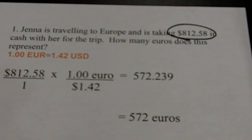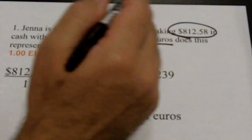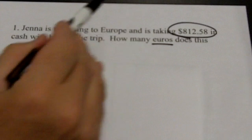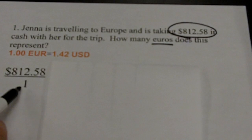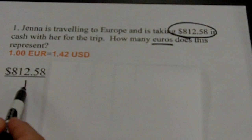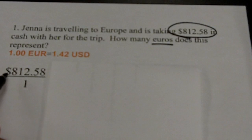The next thing you're going to do is look for what they're asking — how many euros? Underline that. You're going to be amazed using this technique how far you can get without really knowing how to do the problem itself. Let the pen lead the brain. Whatever you've circled, you're going to put that number over one. Take $812.58 and divide it by one. It's mathematically legal — anything divided by one is itself — and it holds the place, making clear what's the numerator and what's the denominator.